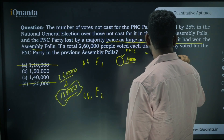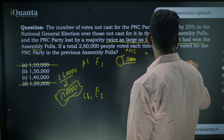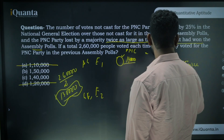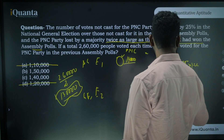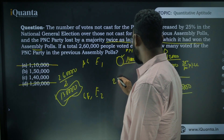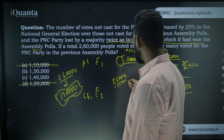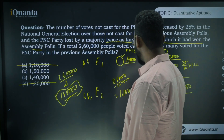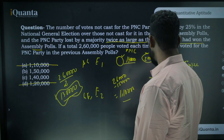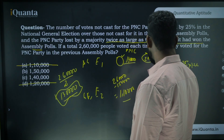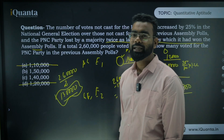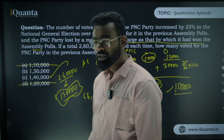If PNC got 1,40,000 votes in election 1, the opposition got 1,20,000. A 25% increase on 1,20,000 is 30,000, so in election 2 the opposition gets 1,50,000. That means PNC gets 2,60,000 − 1,50,000 = 1,10,000. PNC won election 1 by 20,000 votes and lost election 2 by 40,000 votes — which is exactly twice as large. All data matches, so the answer is 1,40,000.